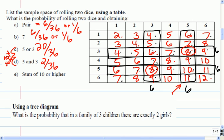What if we wanted to roll a sum of 10 or higher? 6 out of 36. Yeah, there's 1, 2, 3, 4, 5, 6. So 6 out of 36.